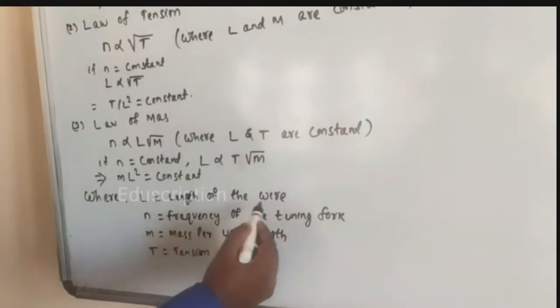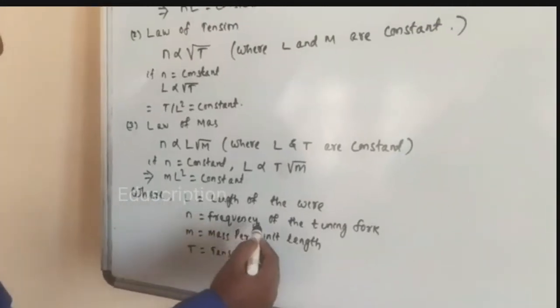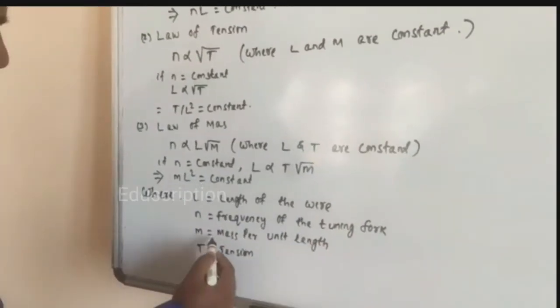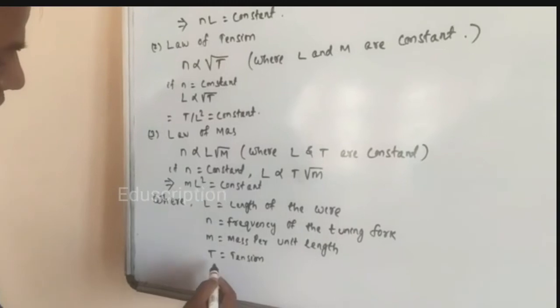Where L is your length of the wire, n is your frequency of the tuning fork, M is your mass per unit length, T is your tension.